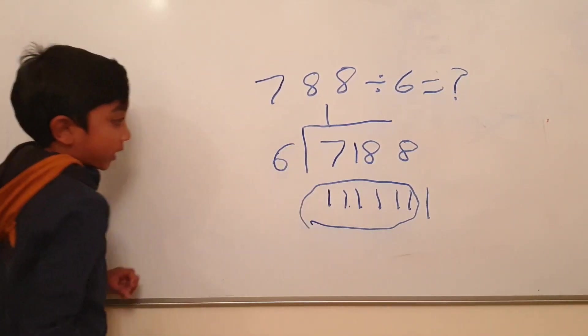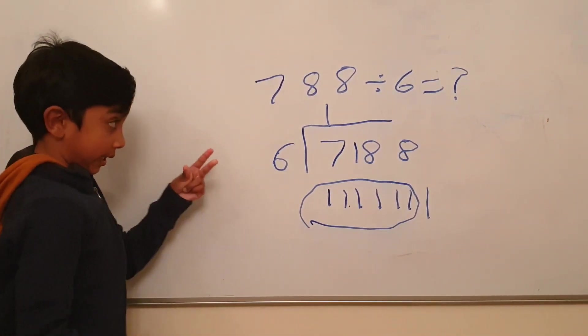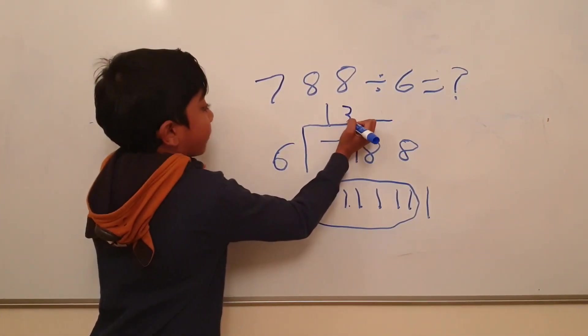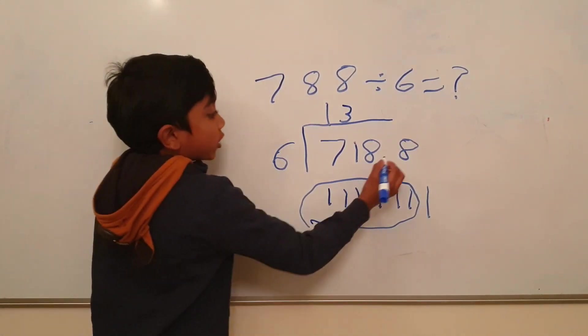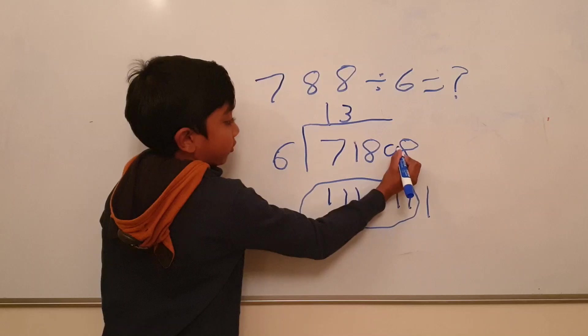So how many 6 in 18? 6, 12, 18. Three. Now we counted all the way to 18. Exactly on 18. So everyone got into the bus for 0.